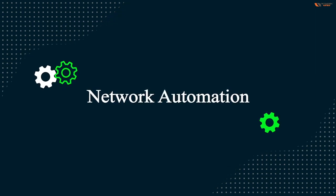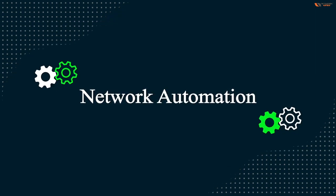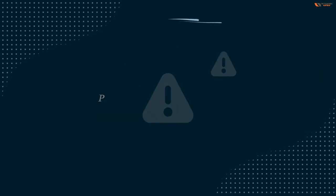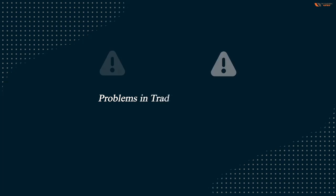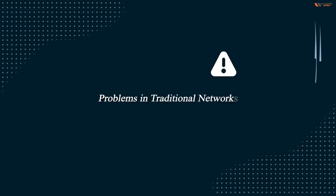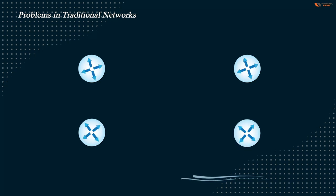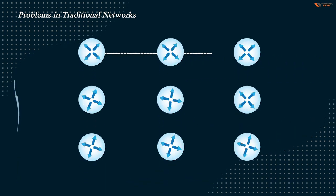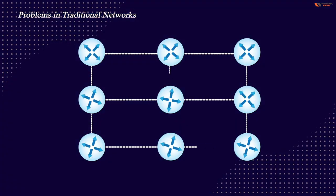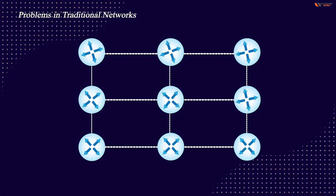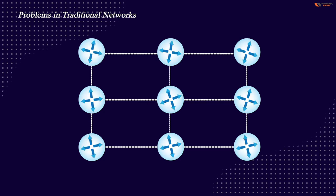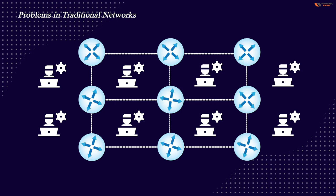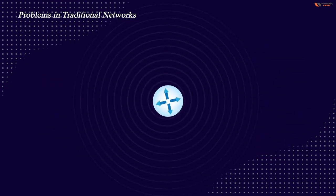We are going to learn network automation. First we need to understand the problems in the current network. Suppose when there are many routers connected with each other — different cities like Delhi, Mumbai, Chennai, Kolkata — all are connected. When you have a very big network, you need more staff.